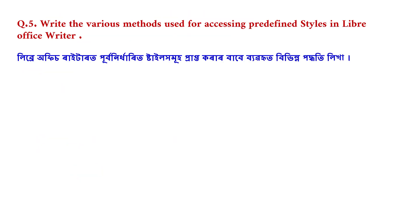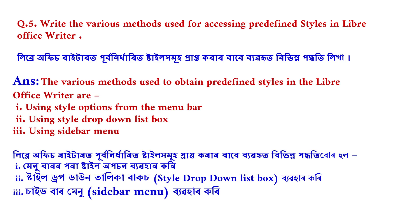Question number 5: write the various methods used for accessing predefined styles in LibreOffice Writer. The various methods used to obtain predefined styles in LibreOffice Writer are: number 1, using style options from the menu bar; number 2, using the style drop-down list box; number 3, using the sidebar menu.